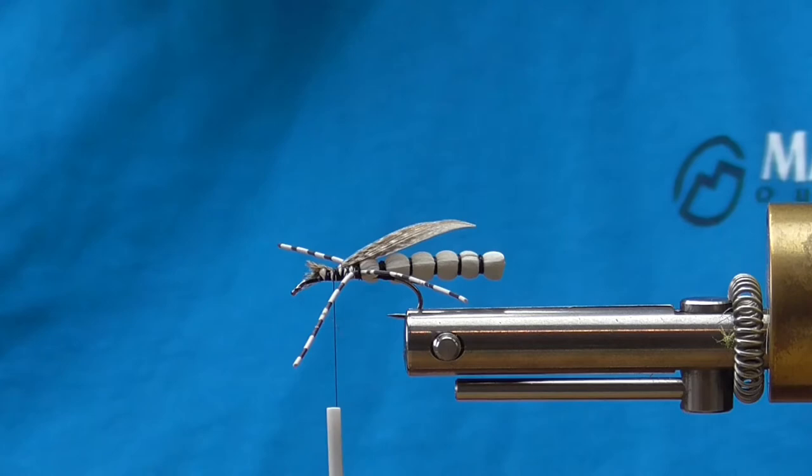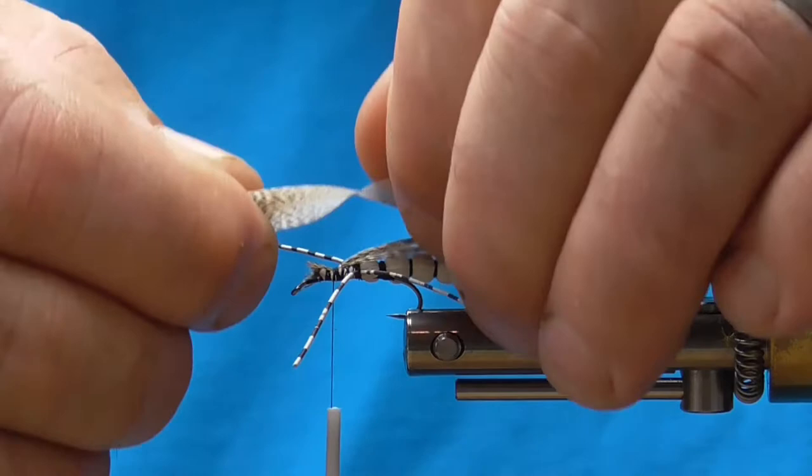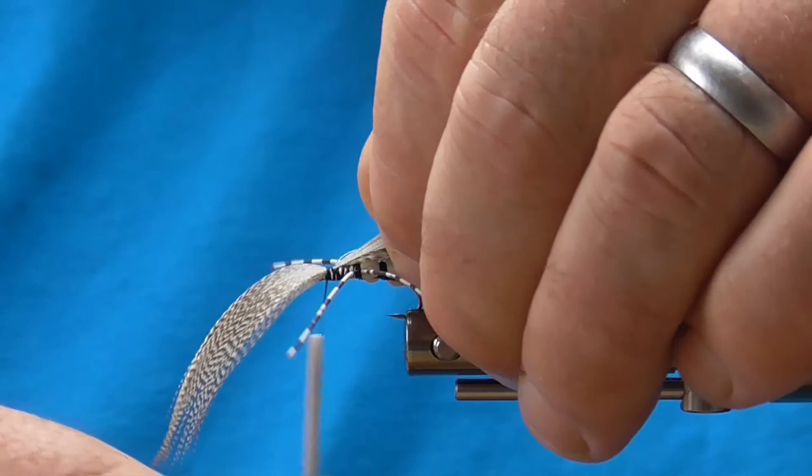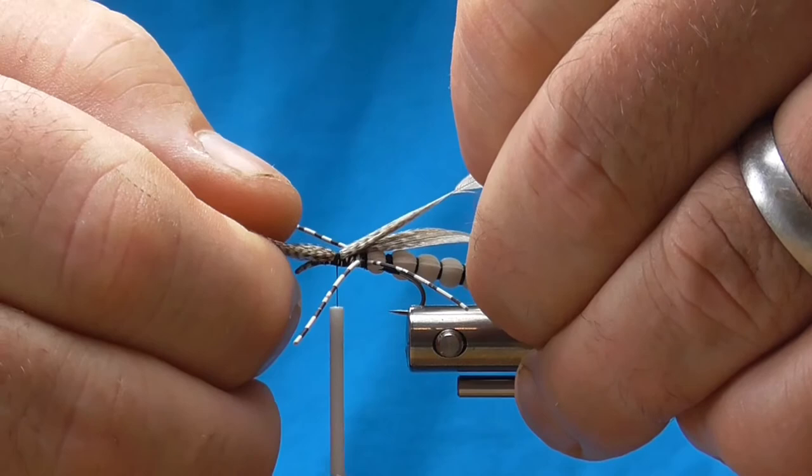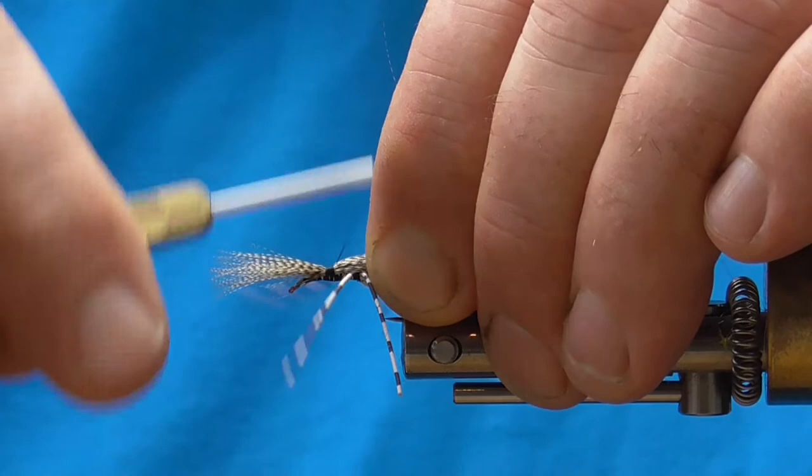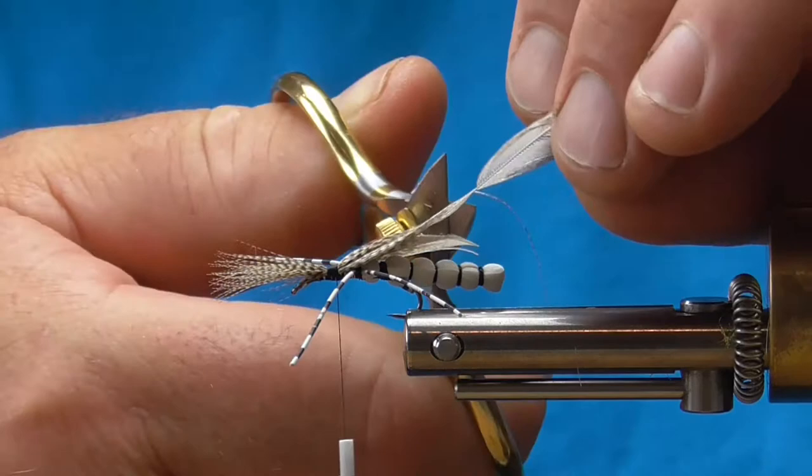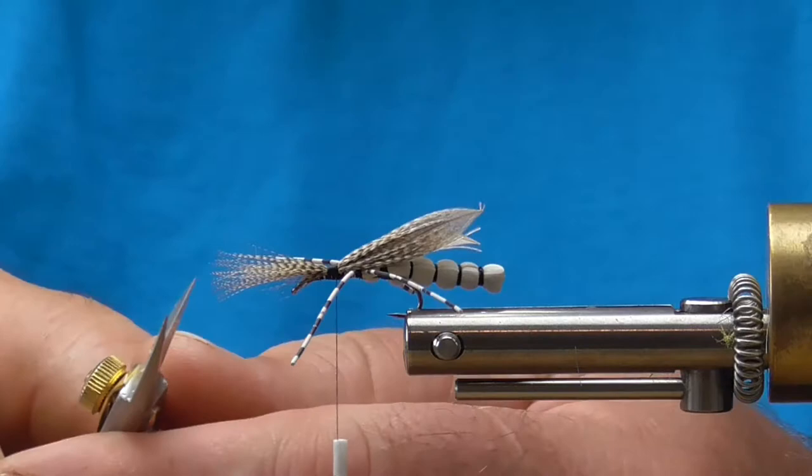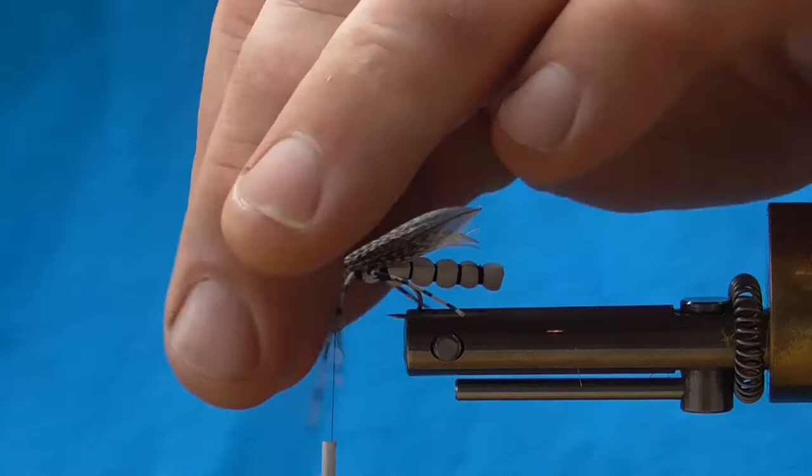And we're going to repeat that process for the other side. So I'm going to tie this in at the same location. A couple of loose wraps so that I can pull this through slightly angled to the other side making it about the same distance. And then I will trim that and trim my front fibers off as well.